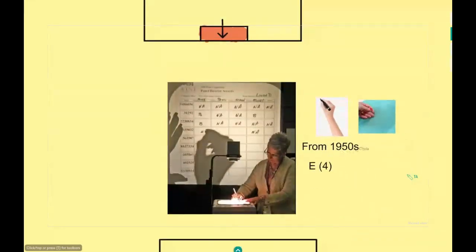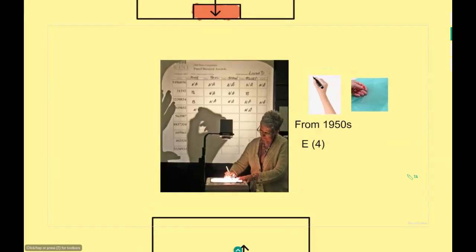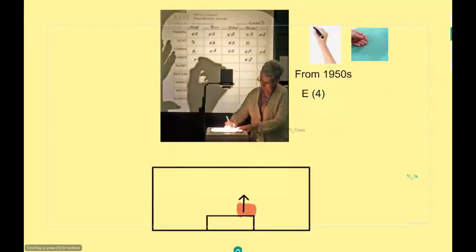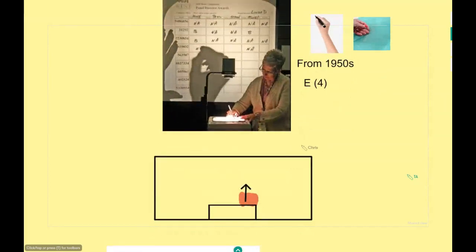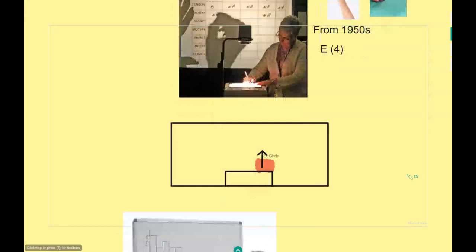Next we move on to overhead projectors — OHPs. These might be before some people's time, but they were used when I went to school. They were often pre-printed, and teachers could write on acetate sheets. The heat map shows you're looking forward this time, but you're still confined to where that acetate sheet is. The ergonomic writing is very good — you can write really neatly — though you've got a bright light in your face. You have to use a Sharpie pen, so you have to be careful not to get it on your skin.